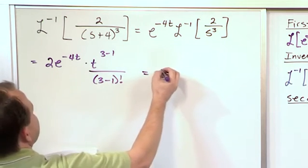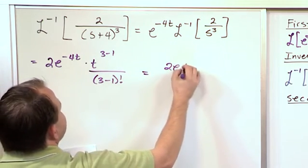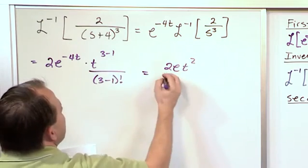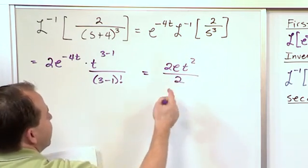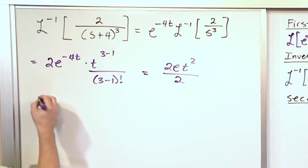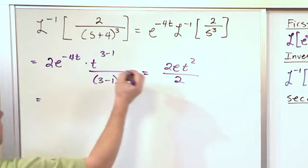So what I'm going to have is 2e to the negative 4t times t squared from here over 3 minus 1, which is 2 factorial, which just gives me 2. Now you can see I have a 2 on the top and a 2 on the bottom, so they cancel.